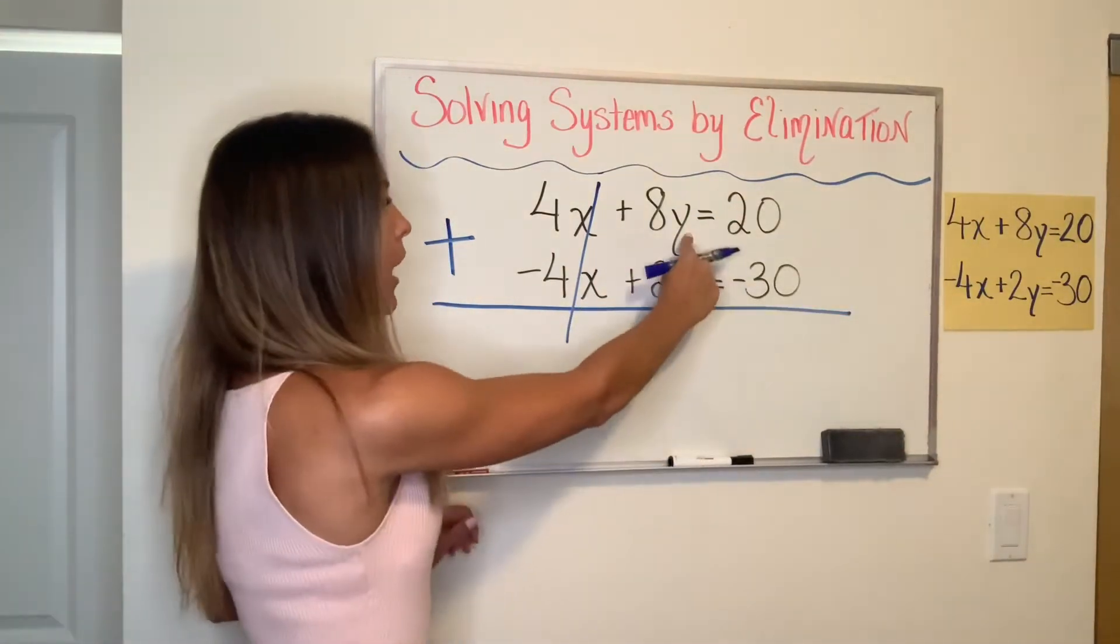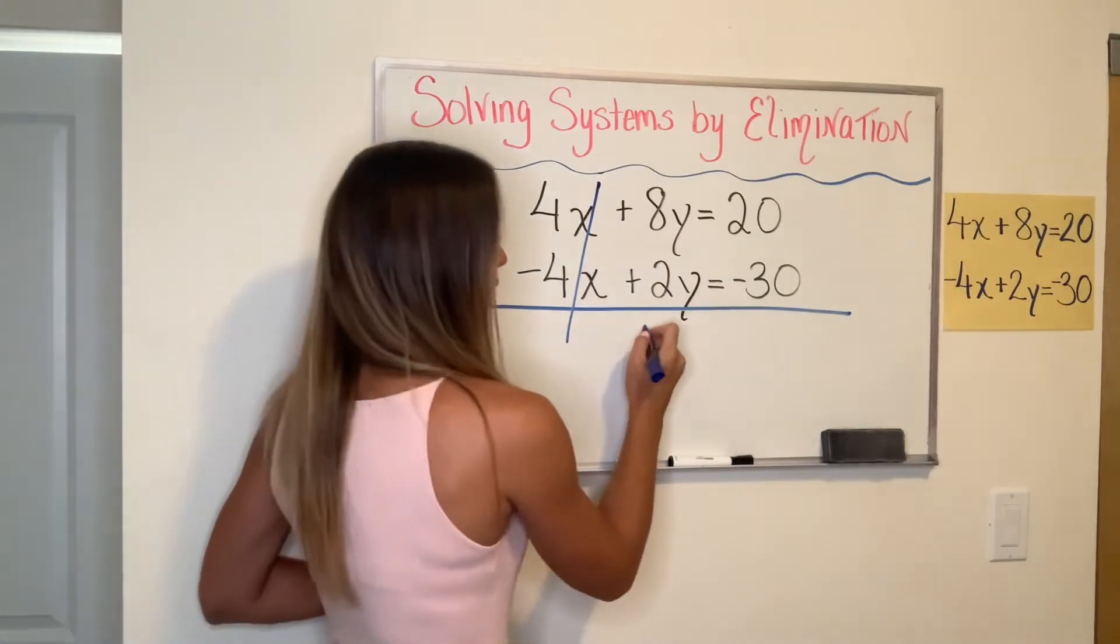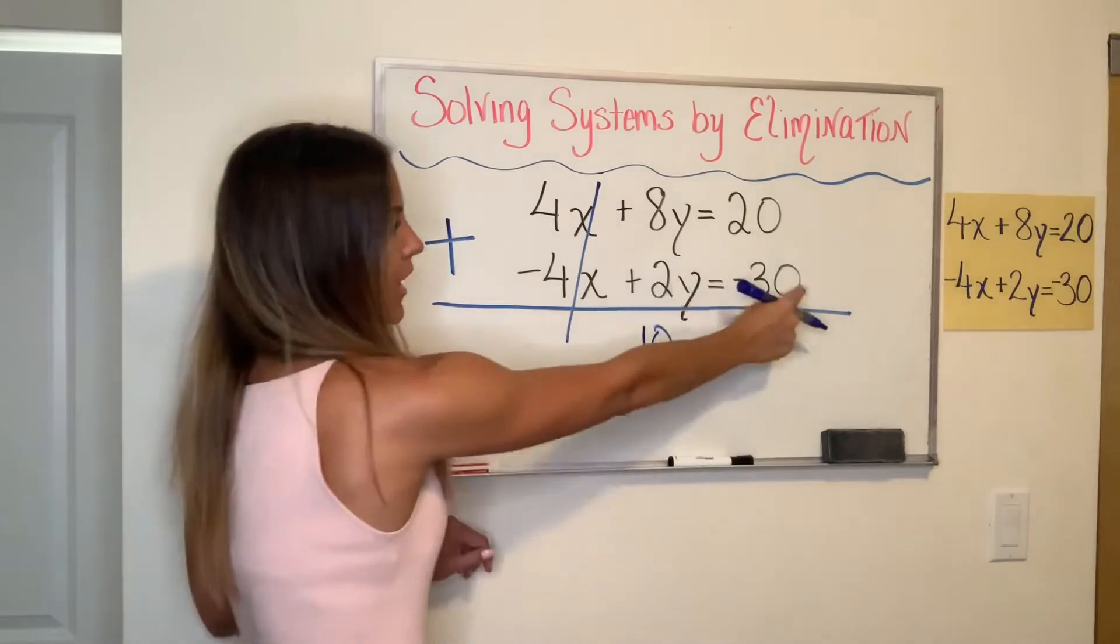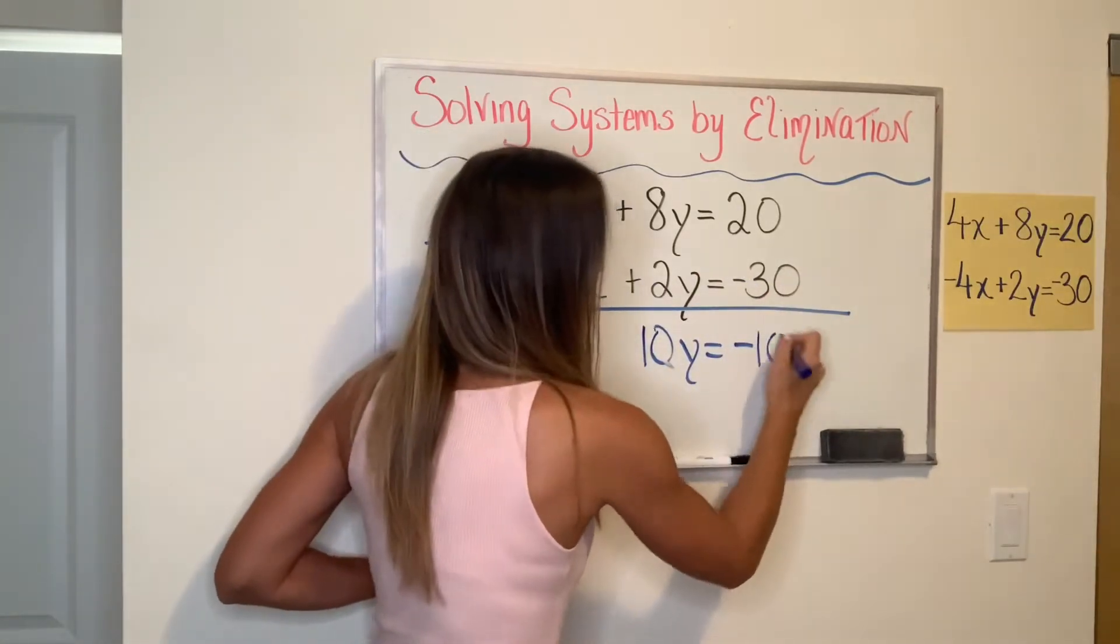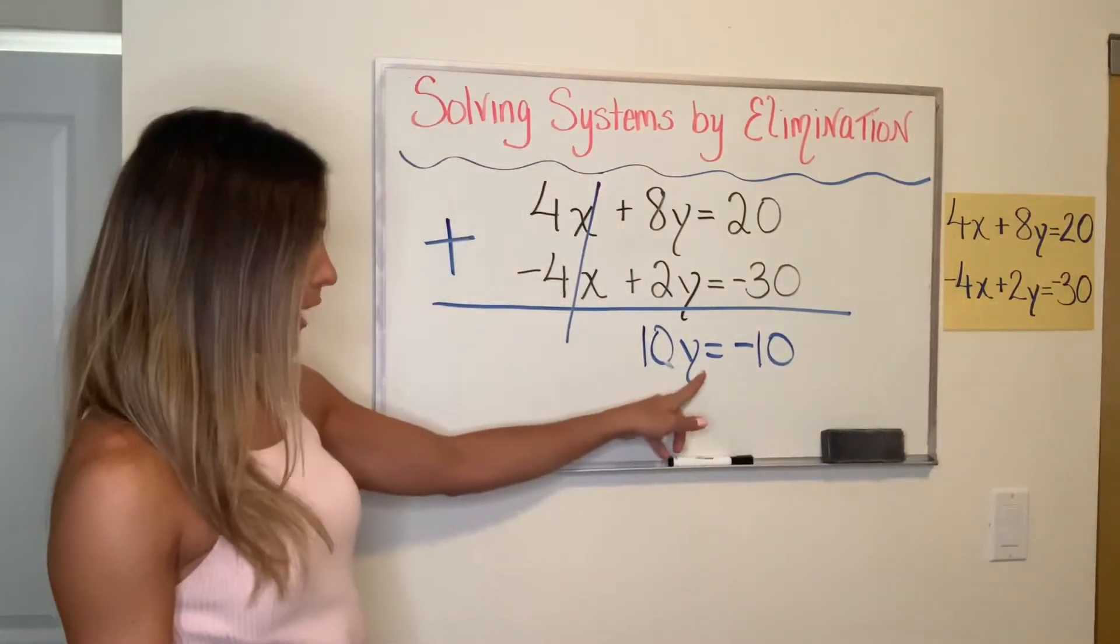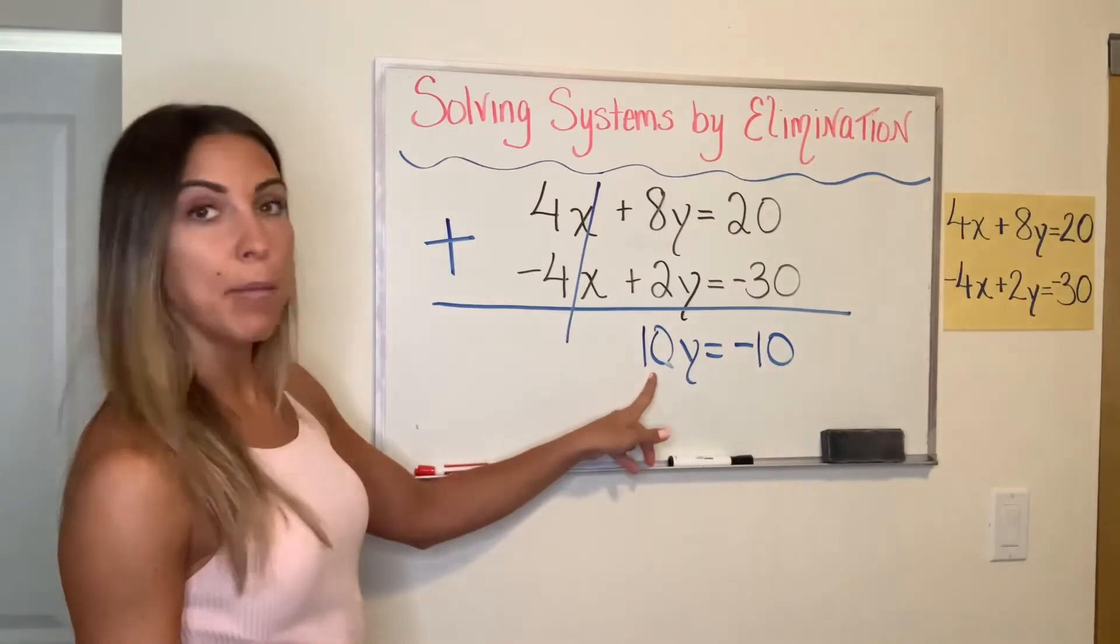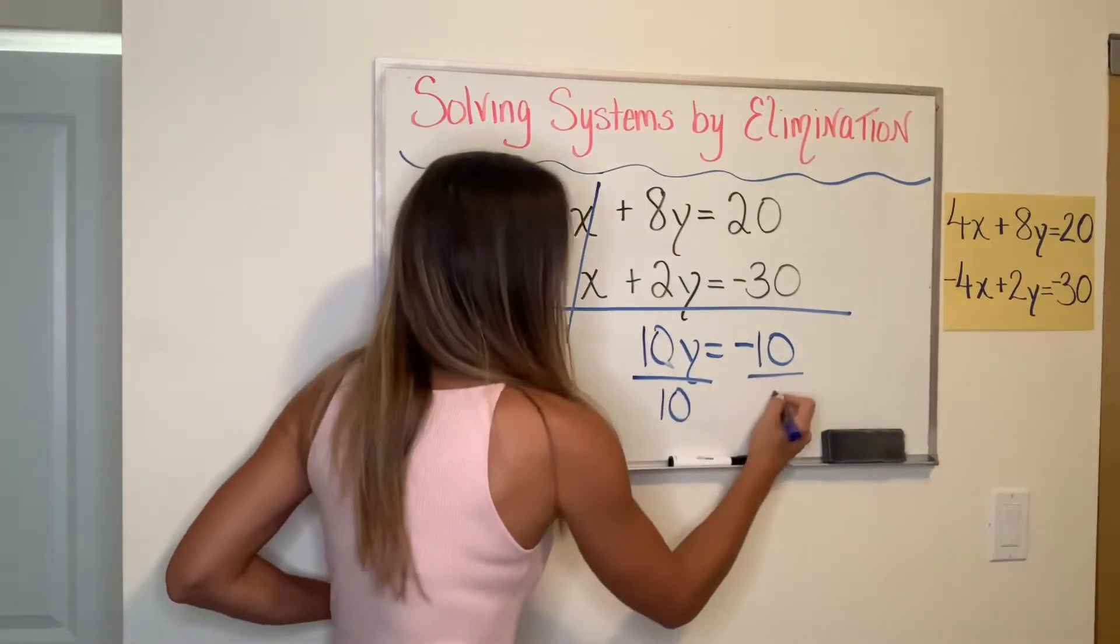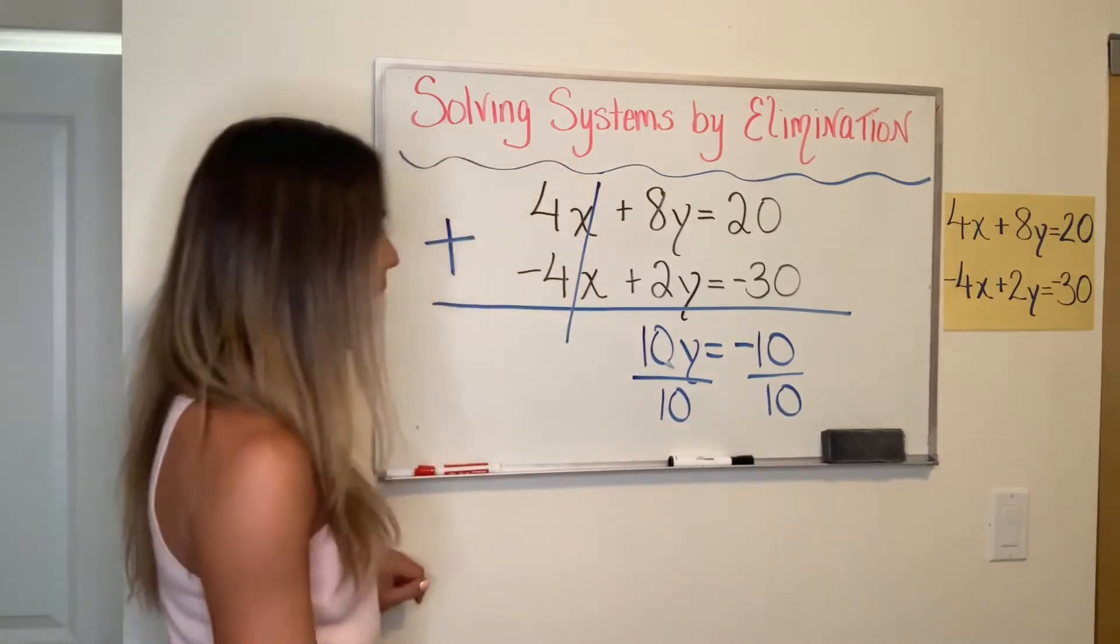We're going to continue. 8Y plus 2Y is 10Y equals 20 plus negative 30 is negative 10. Now I have a one step equation. I'm trying to get Y by itself. Y is being multiplied by 10. So I'm going to do the inverse operation, which is to divide by 10 on both sides. On my left side, my 10s cancel out because 10 divided by 10 is 1.